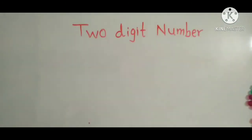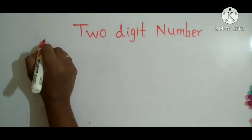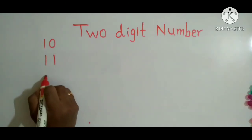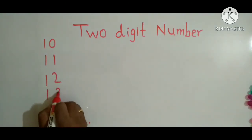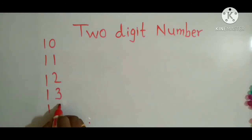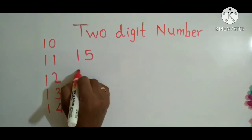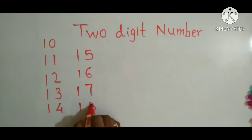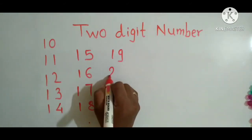Now we will see the number names from 10 to 20. Ten, eleven, twelve, thirteen, fourteen, fifteen, sixteen, seventeen, eighteen, nineteen, and twenty.